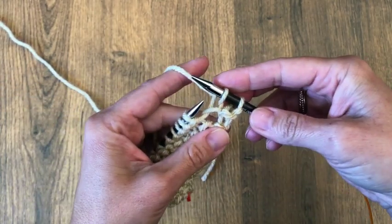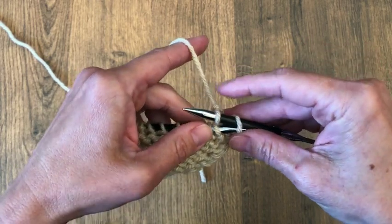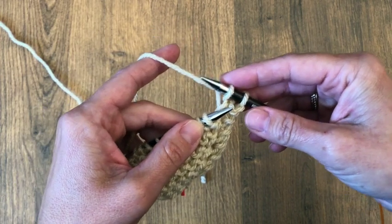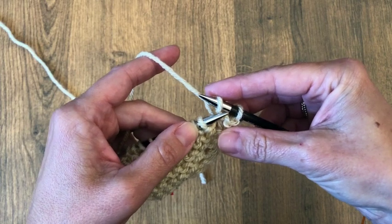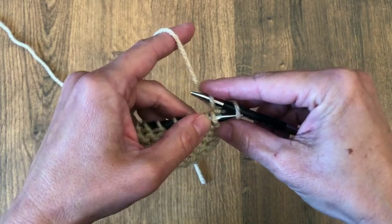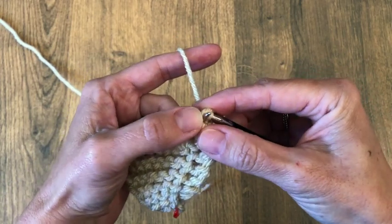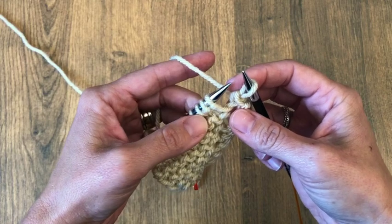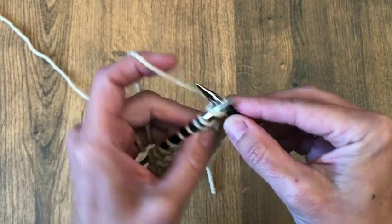I bind off as loose as I can without being crazy, so that my stitches aren't too tight, because binding does tend to have a little bit tighter edge. So I knit the first two, insert my left needle into the first stitch, pull it over the second stitch, and then I pull that stitch up just a little bit, again trying to keep it loose. Knit.